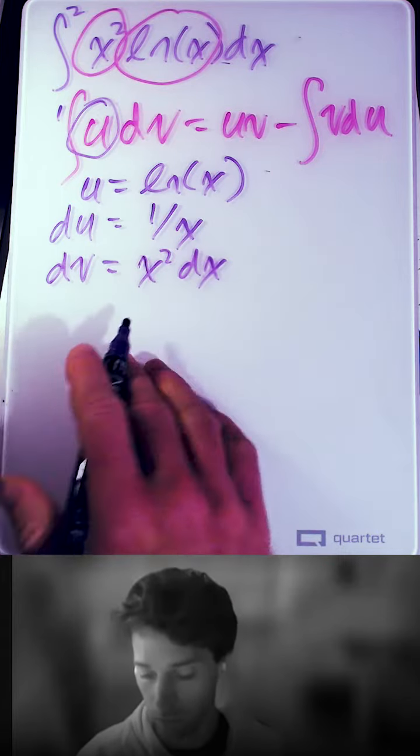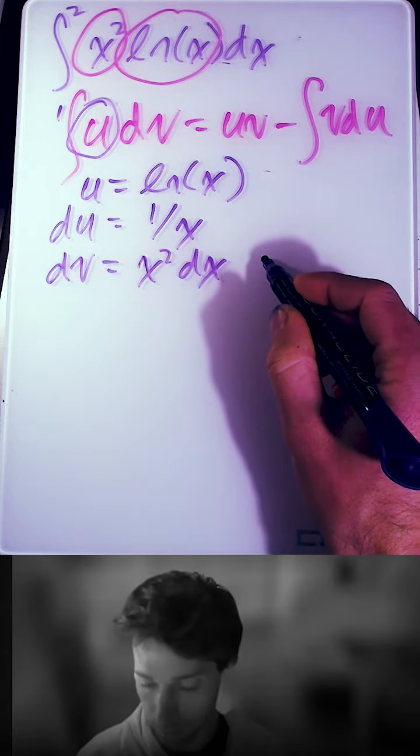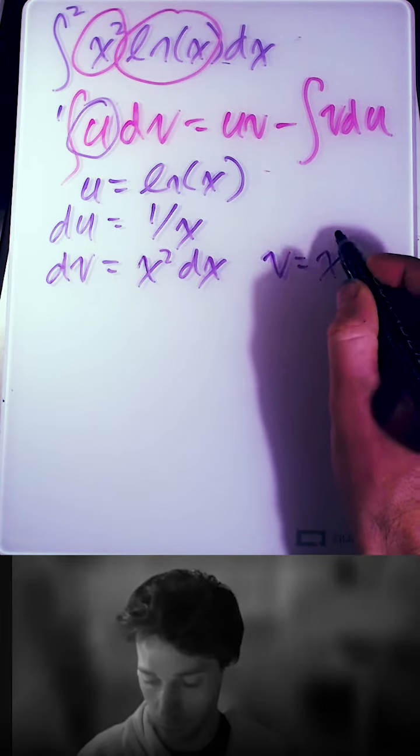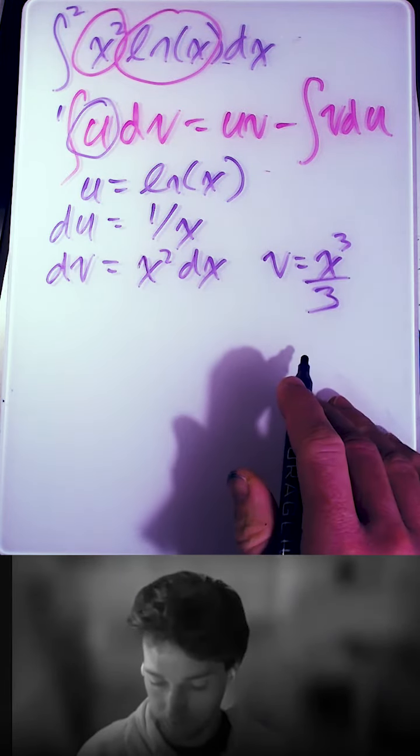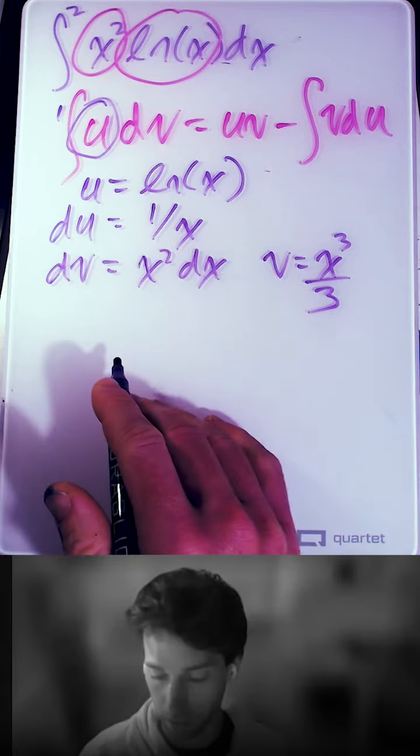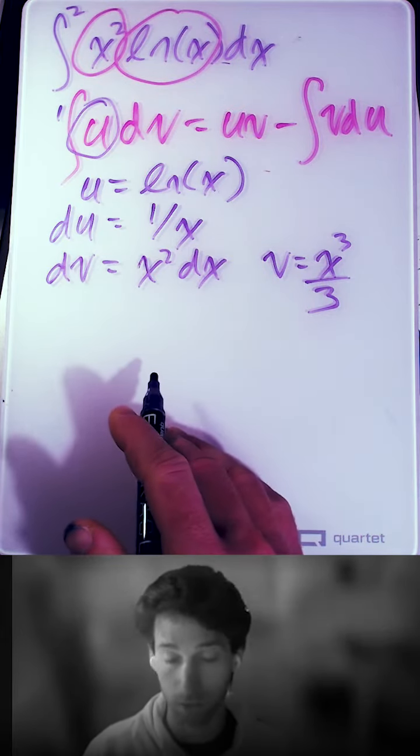So v is the integral of that, so that's going to be x cubed over 3. And that's what we need in order to set up this problem.